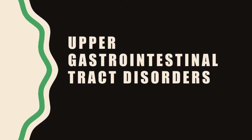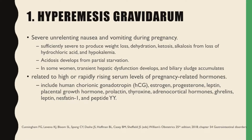The first upper GI tract disorder is hyperemesis gravidarum. This refers to severe unrelenting nausea and vomiting during pregnancy. It may be so severe as to produce weight loss, dehydration, ketosis, alkalosis from loss of hydrochloric acid, and hypokalemia. Acidosis may also develop from partial starvation.